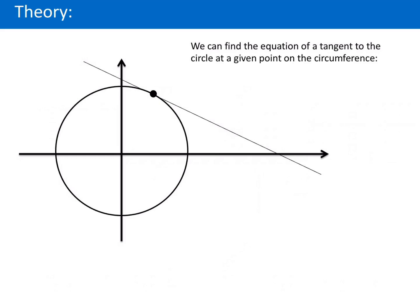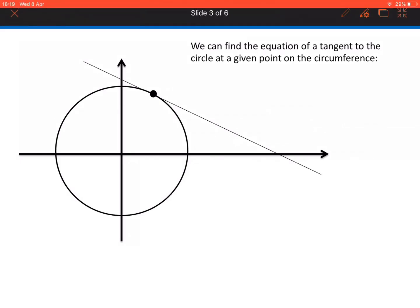So here's the theory. We're going to find the equation of a tangent to a circle at a given point. So if we're given that this point is (x,y), we're going to find the equation of this tangent to the circle at that point (x,y).